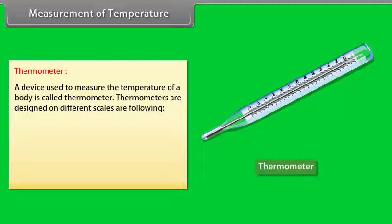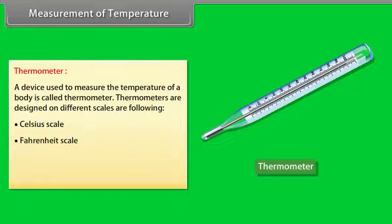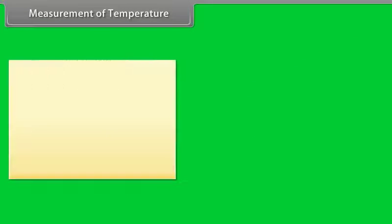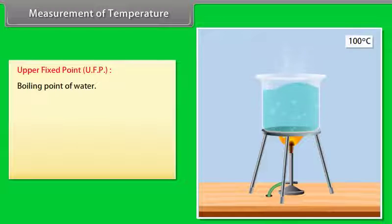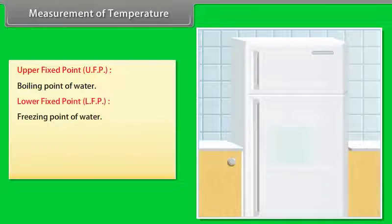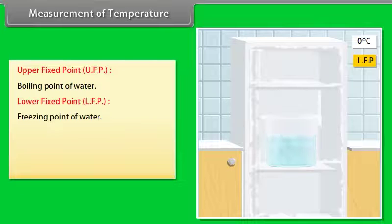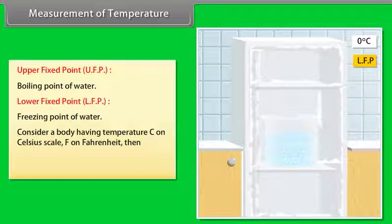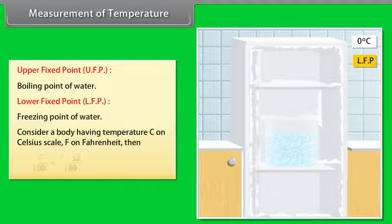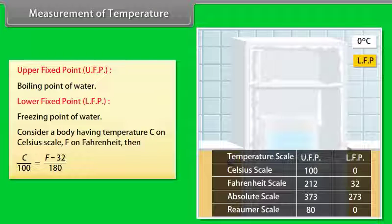A device used to measure the temperature of a body is called a thermometer. Thermometers are designed on different scales: Celsius scale, Fahrenheit scale, Kelvin scale, and Réaumur scale. The boiling point of water is known as the upper fixed point; the freezing point of water is known as the lower fixed point. For a body with temperature C on the Celsius scale and F on the Fahrenheit scale: C/100 = (F − 32)/180.